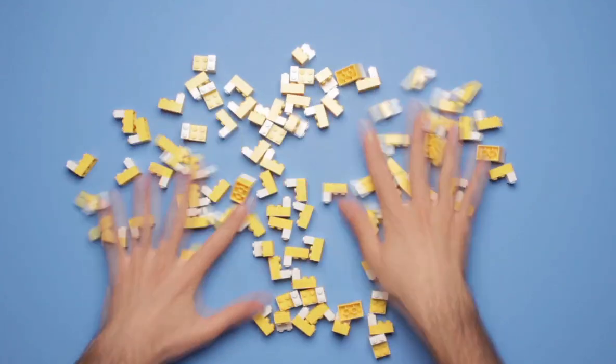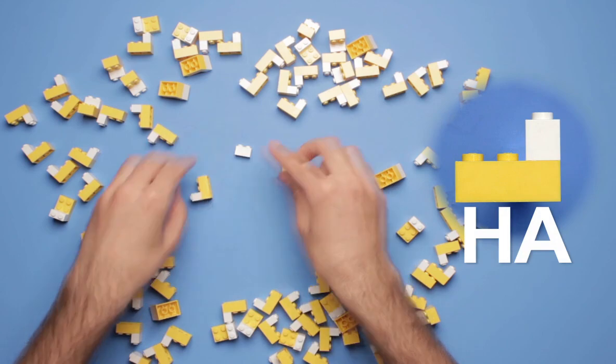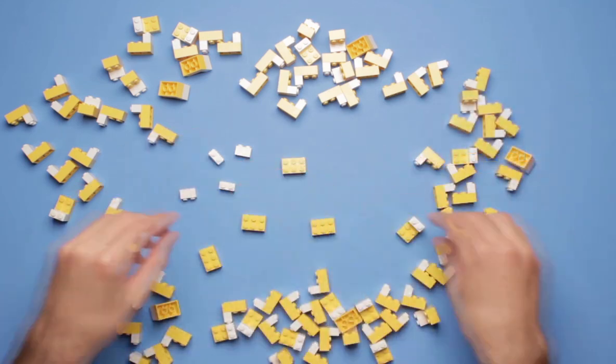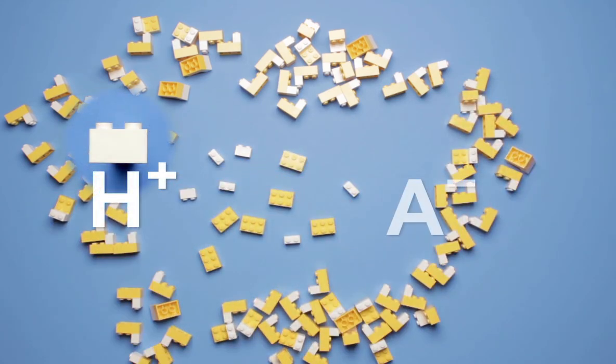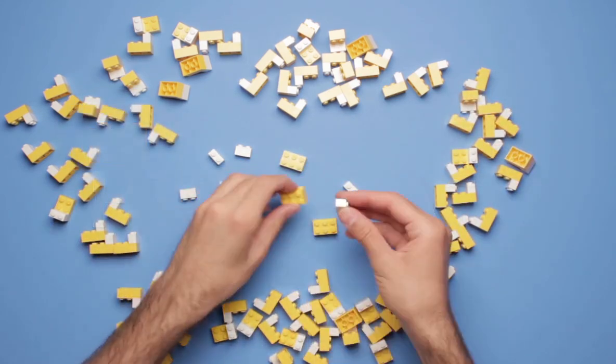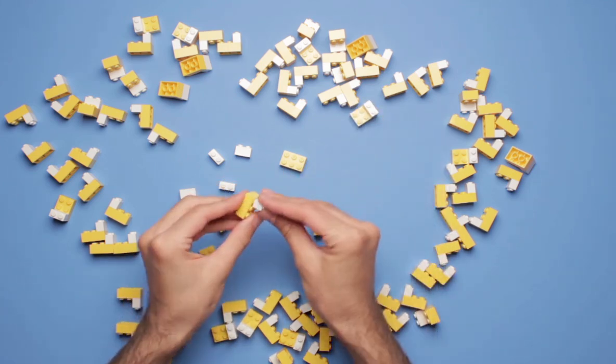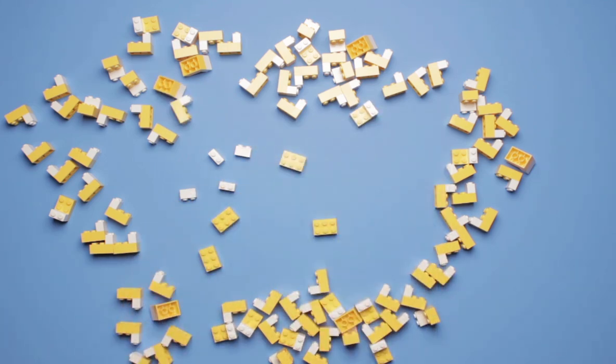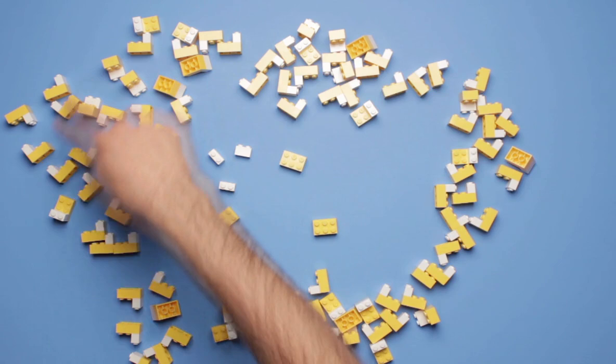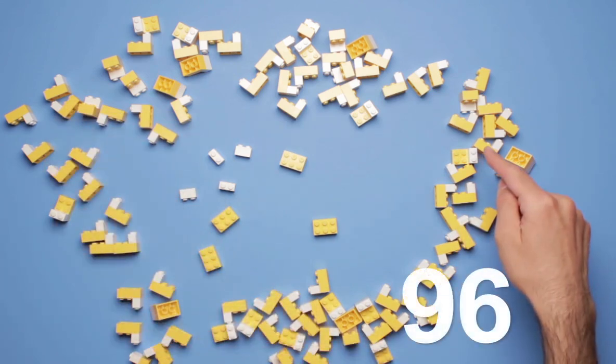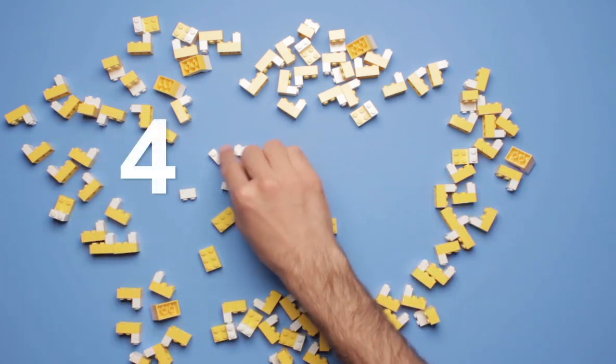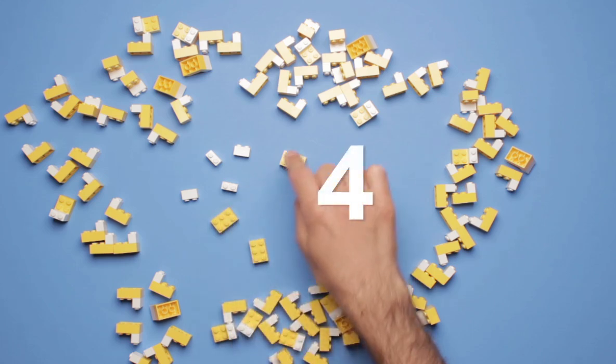The equilibrium expression would be this. We always use concentrations in these expressions even though in our model we're using number of molecules, or Legos. But the principle is the same. When we dissolve 100 molecules of our generic weak acid, HA, in water, some of them will dissociate, forming H plus and A minus ions. Some of those H plus and A minus ions will react with each other to reform HA. But at any given point after the system has reached equilibrium, there will be a fixed number of HA, H plus, and A minus ions.